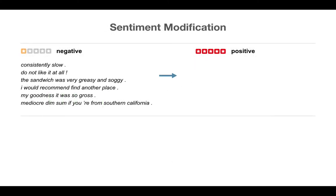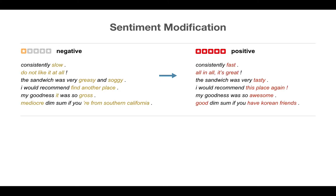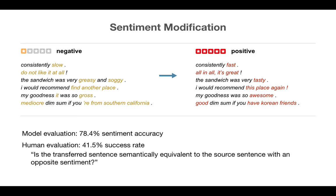Our model can be used to transfer sentiment between positive and negative reviews. For example, it transfers 'do not like it at all' to 'all in all it's great,' and transfers 'the sandwich was very greasy and soggy' to 'the sandwich was very tasty.' It achieves 78.4% sentiment accuracy as measured by a sentiment classifier. According to human evaluation, it successfully rewrites 41.5% of the sentences to the opposite sentiment while preserving their content.